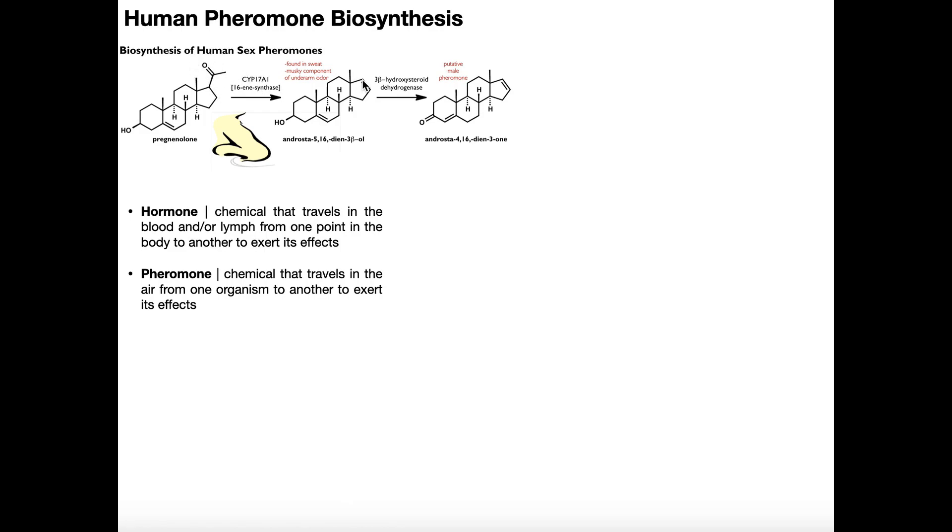Here, it's just going to cleave off that side chain and leave a double bond. And when you have this compound, this is really sort of the parent pheromone. All pheromones that we know of in humans come from this compound.